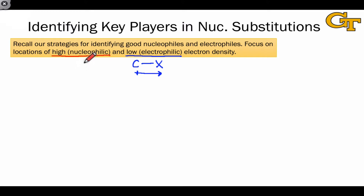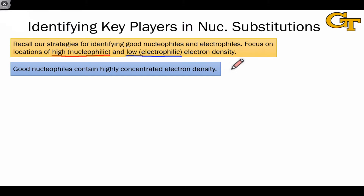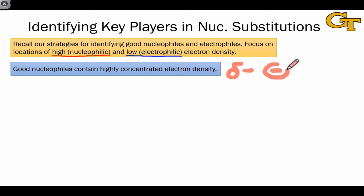Nucleophiles, on the other hand, will tend to be on the negative ends of dipoles, so they may be relatively electronegative atoms, and they'll often have nonbonding lone pairs — these will be the true players in terms of electron flow in nucleophilic substitution reactions. Good nucleophiles contain highly concentrated electron density, which amounts to very large partial negative charge or even full negative charge in the form of a negative formal charge at one or more atoms.